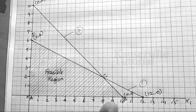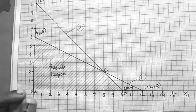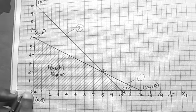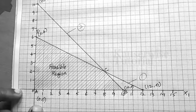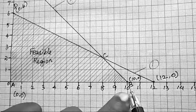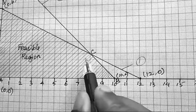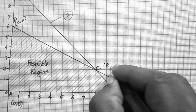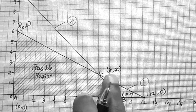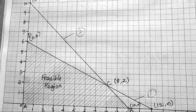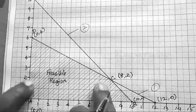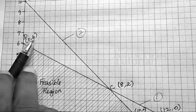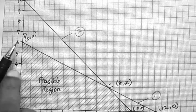The four corner points are: A = (0, 0), B = (10, 0), C = (8, 2), and D = (0, 6). We now substitute these values into the objective function to find the optimum point.